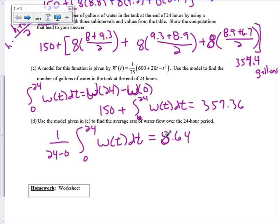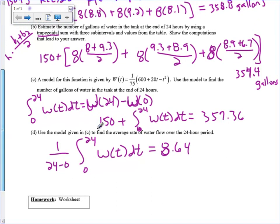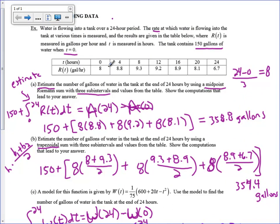And I want to make sure that that makes sense. This is the average rate of water flow, 8.64, which would be gallons per hour. And going up to the table, would you believe that 8.64 is the average height of these numbers? We go 8 up to 9, but then back down all the way to 6.7. And that's a reasonable answer.